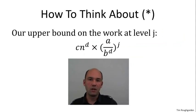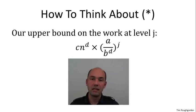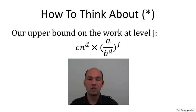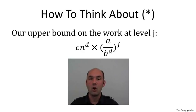Recall from the previous video that the way we bounded the work done by the algorithm is we zoomed in on a particular level J of the recursion tree. We did a computation which was the number of subproblems at that level — A to the J — times the work done per subproblem: the constant C times quantity N over B to the J raised to the D. That gave us C·N^d times the ratio (A / B^d) raised to the J at a given level J. The expression star from the previous video was just the sum of these expressions over all of the logarithmic number of levels J.